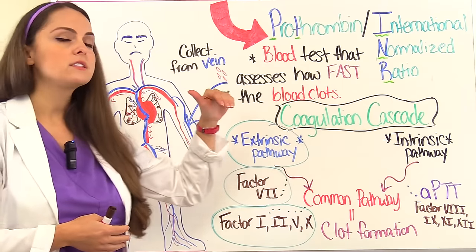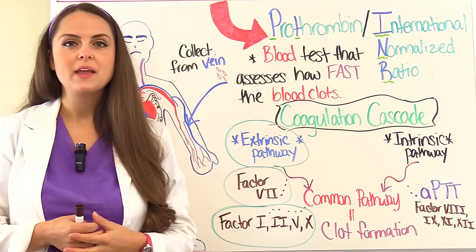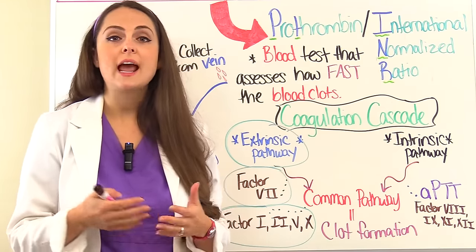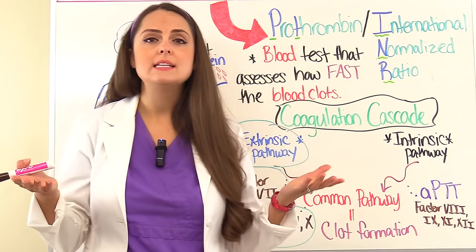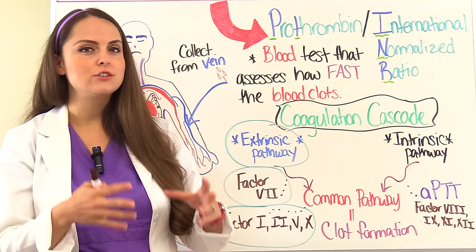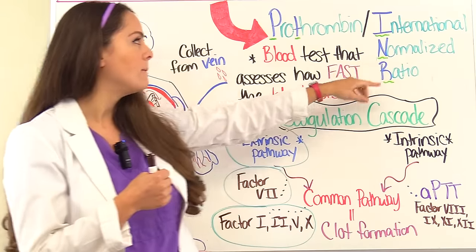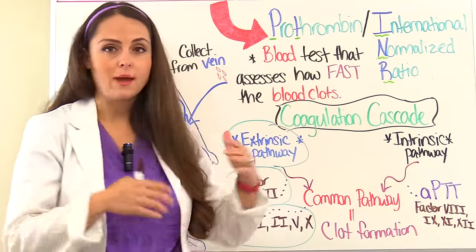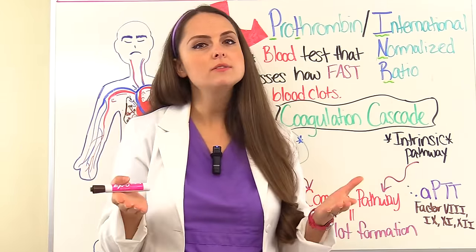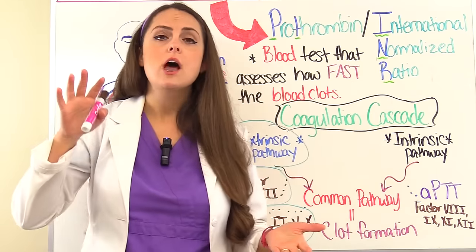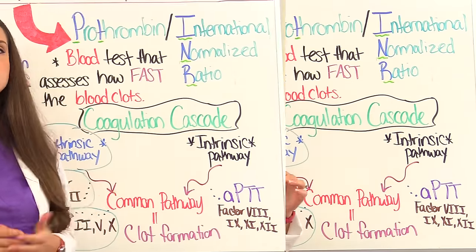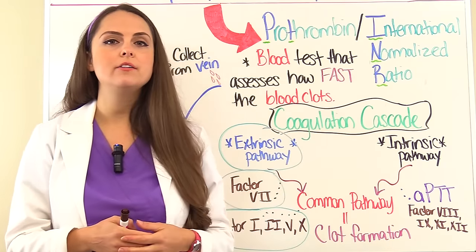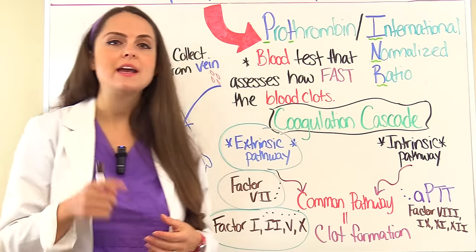The INR stands for international normalized ratio. The INR is really important for patients who are taking warfarin, also called Coumadin, which is an anticoagulant, because that medication's whole goal is to help prolong how long it takes a patient to form a clot. We calculate the INR level based on the PT level, creating a standardized way of reporting it, because when a patient's on warfarin, you have to monitor them very closely and adjust the warfarin dosage accordingly. The PT INR level is also helpful in diagnosing a potential bleeding disorder.